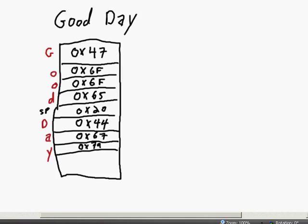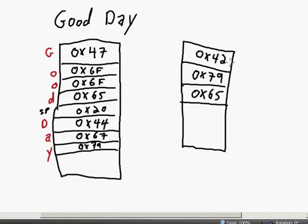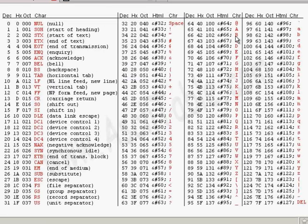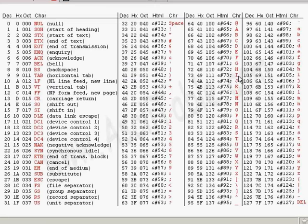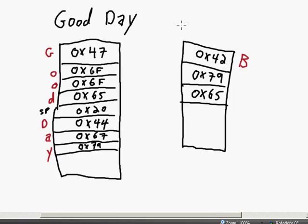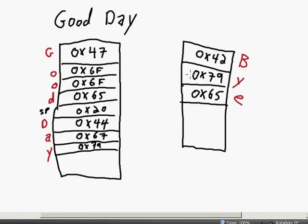Going the other way — let's say we had in memory three characters: hexadecimal 42, hexadecimal 79, and hexadecimal 65. Knowing that these are ASCII characters, we can go to the ASCII table: 42 is capital B, 79 is lowercase Y, and 65 is lowercase E. So only by knowing the context for these bits can we figure out what those bits actually mean.